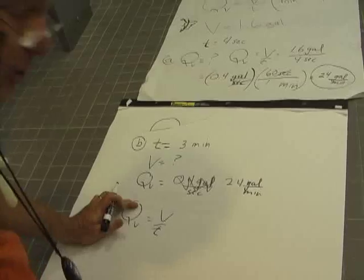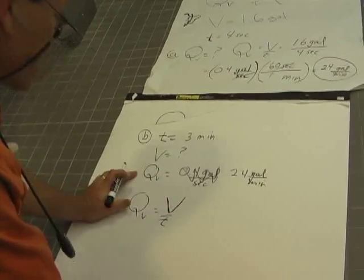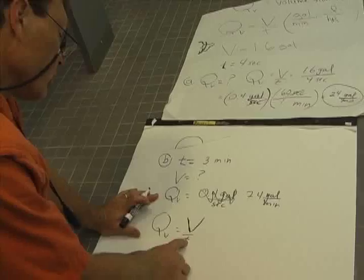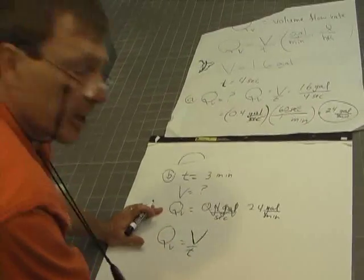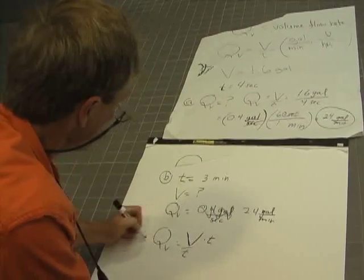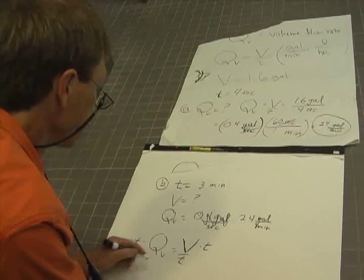I want the volume, though. So what I need to do is get it by itself. It's already on top. So I'll multiply the top of both sides by time. As long as I do the same thing to both sides, we'll still be equal.